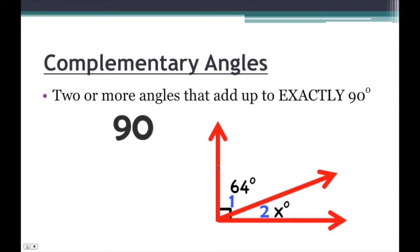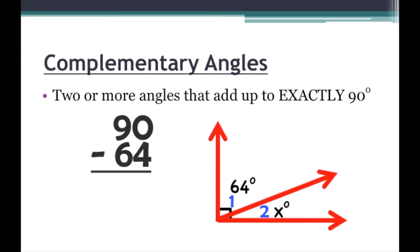We know that the entire angle is a right angle, so therefore it's 90 degrees. Since we know that's 90 degrees, we know that angle 1 and angle 2 together have to add up to 90 degrees. So to find angle 2, we subtract 64 degrees from 90 because the entire angle is 90 degrees and this angle goes 64 degrees so far. 90 minus 64: we borrow from the 9, make that an 8, that becomes 10, and 10 minus 4 is 6, and 8 minus 6 is 2. So the measure of angle x is 26 degrees.